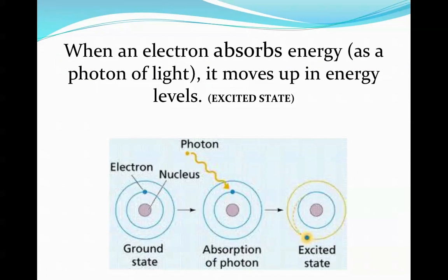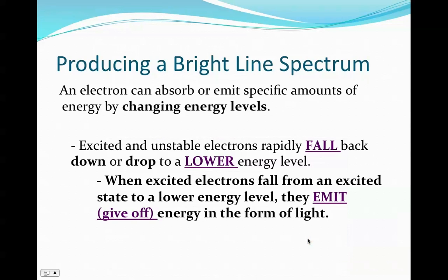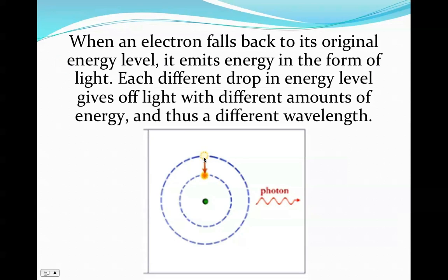So what happens, and this is just kind of a little diagram, we have an electron that's gained a photon of light. It's absorbed it and jumped up to a higher energy level. Now like we said, this is unstable. So those unstable electrons are going to rapidly fall back down or drop to a lower energy level. When the excited electrons fall from the excited to the lower energy level, they're going to emit or give off energy in the form of light. So here this electron, which was unstable, is going to give off a wavelength or photon of light and return to a lower energy level.